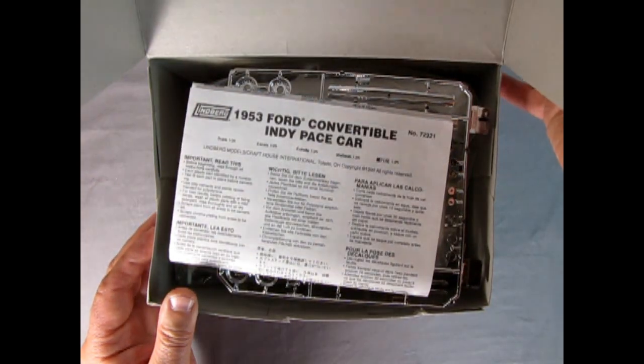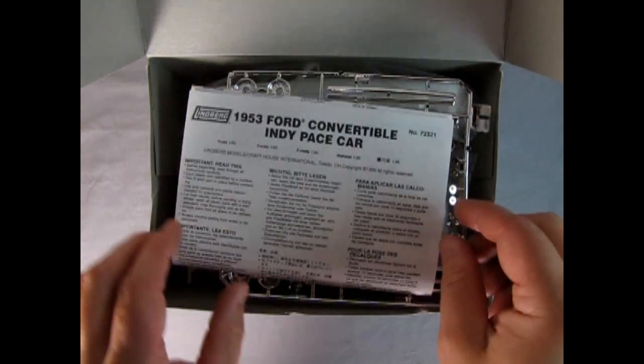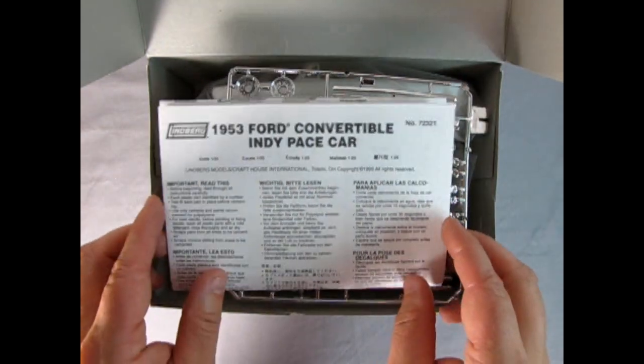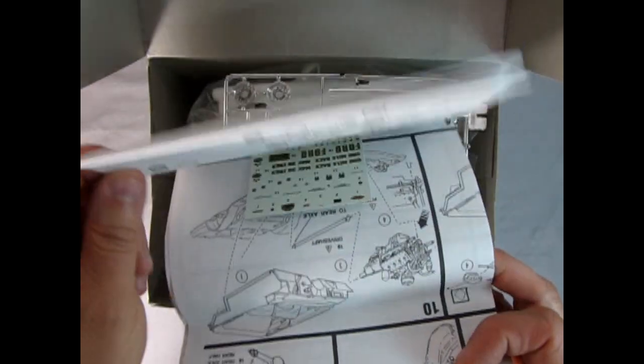Lindbergh chose to use that same opening box style that Revell uses which I don't really like because when you go to pick up the model everything wants to fall out of it. There's our instruction sheet and we also have our decals inside which I'll let Danny the dog take a look at.